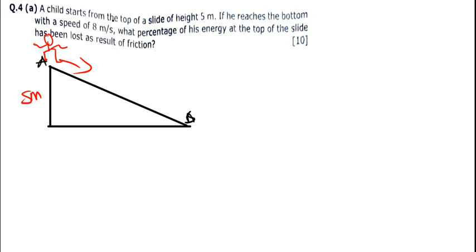So the velocity at point A is going to be 0 — the initial velocity is 0. But the velocity at point B is the one we have been told, which is 8 meters per second.